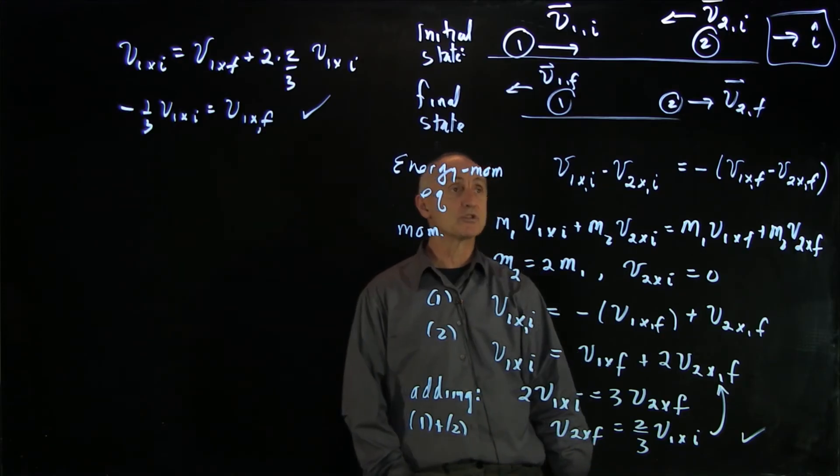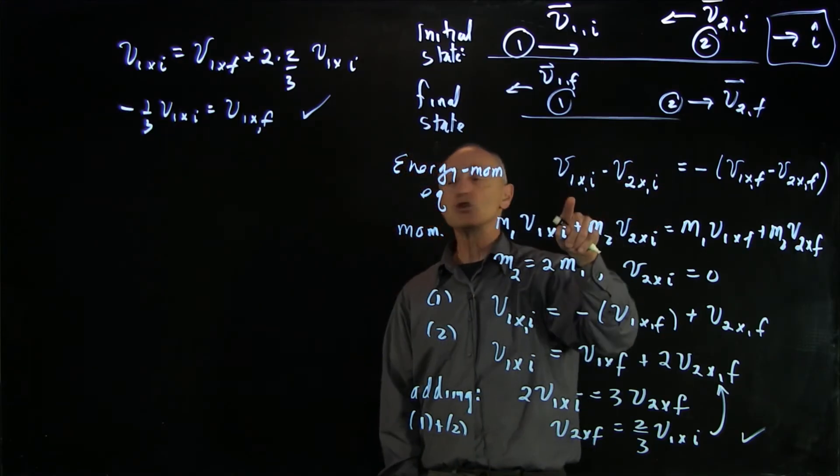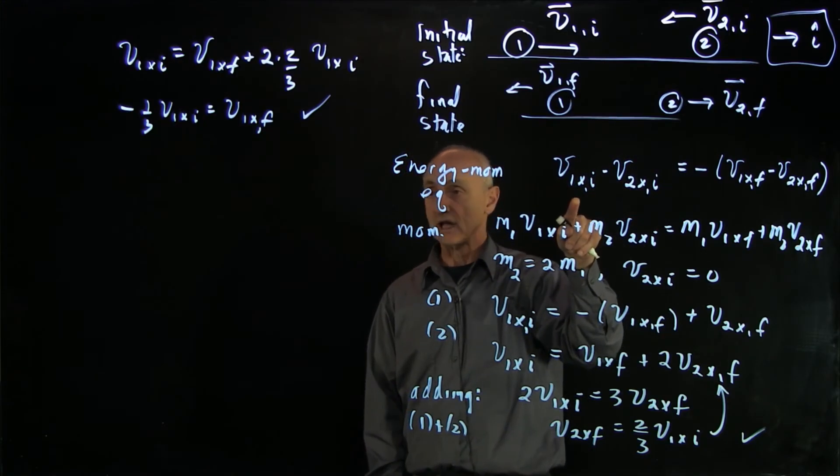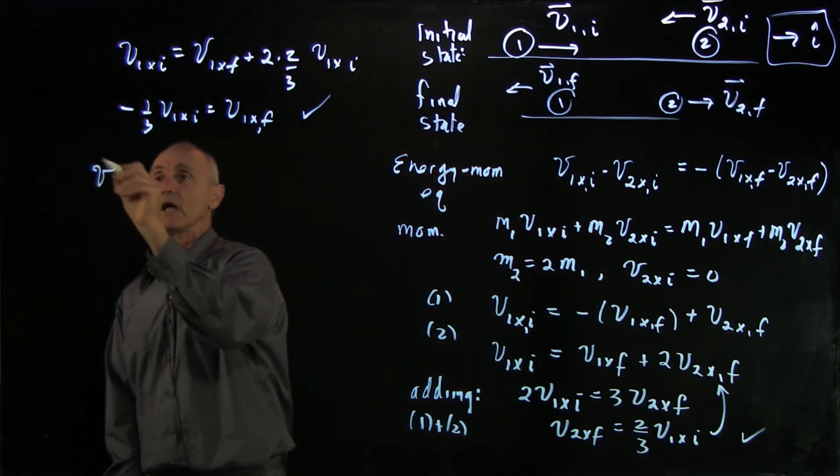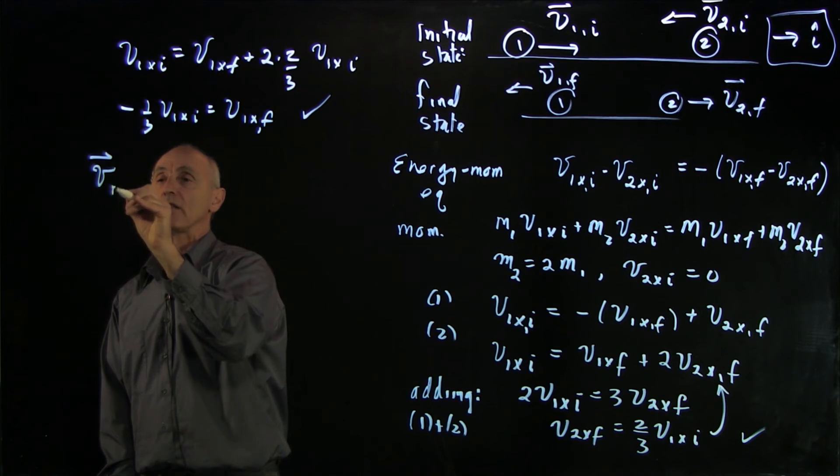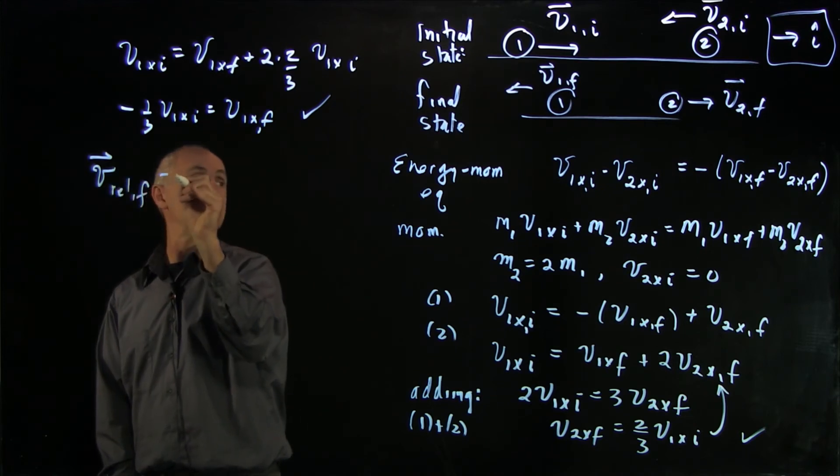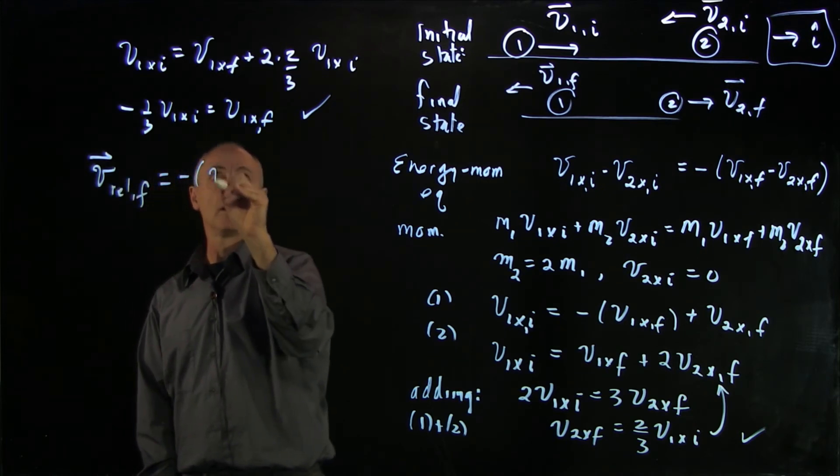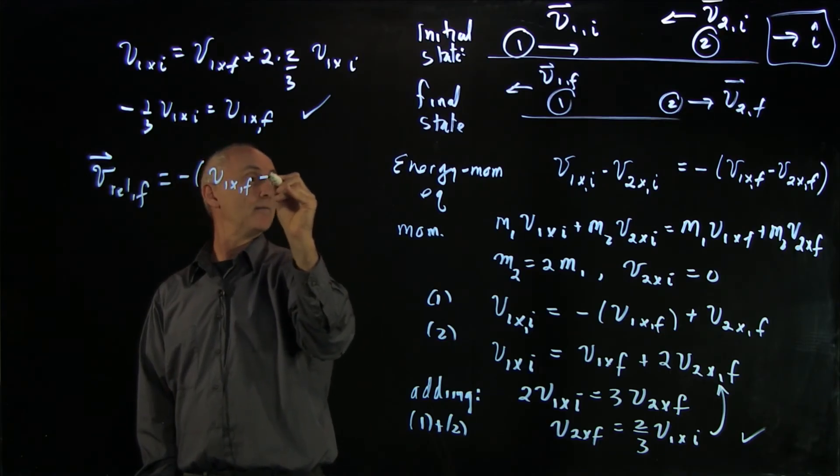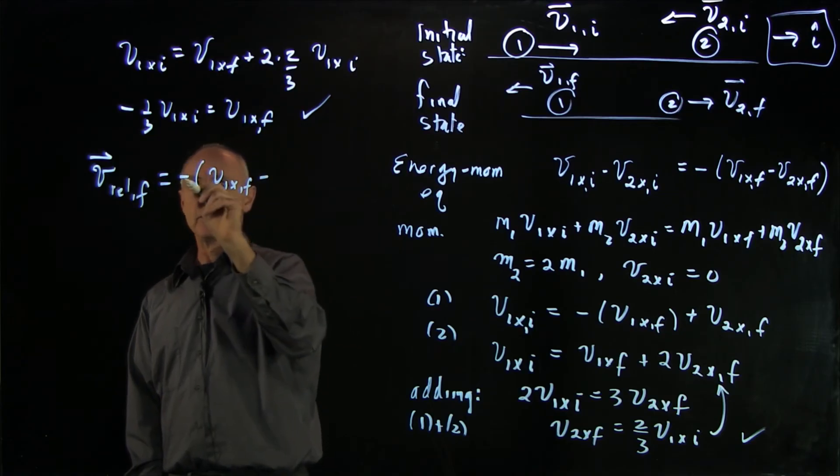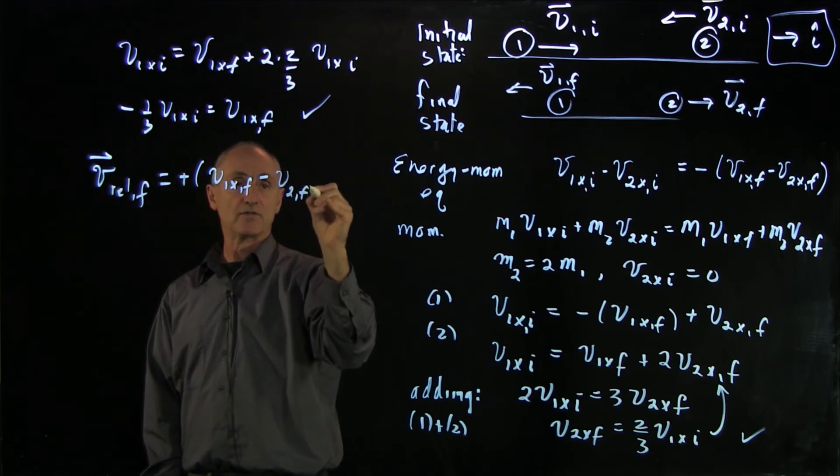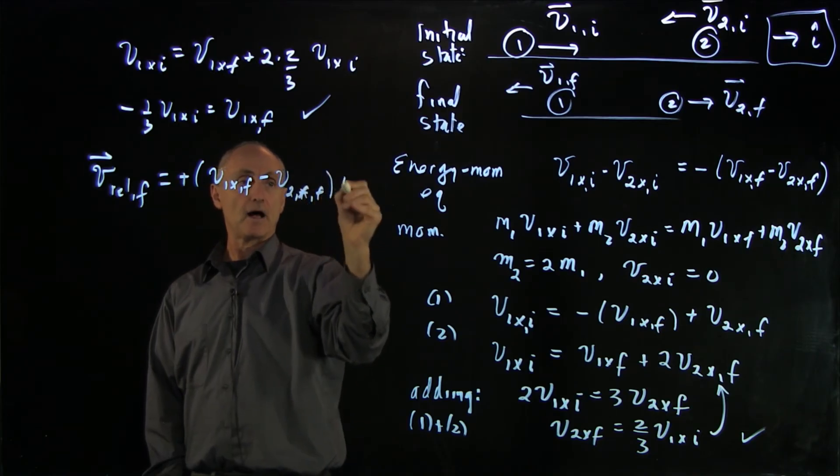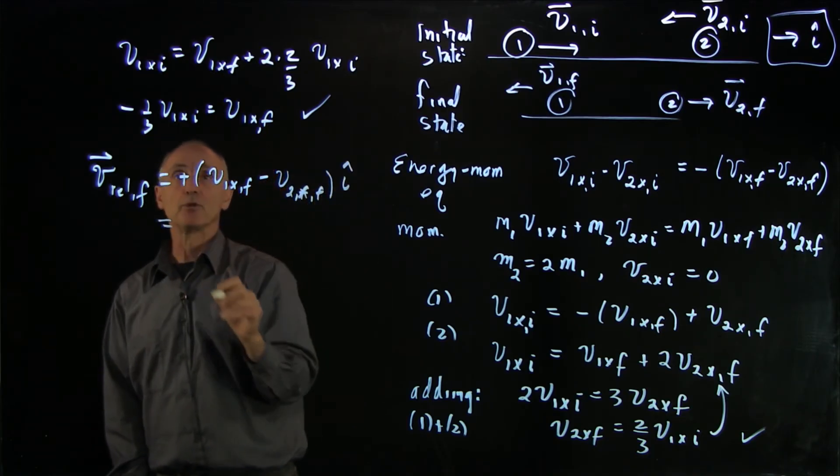And we can just double check our result that the initial relative velocity was simply v1 x. And the final relative velocity is minus v1 x final minus, let's see, the final relative velocity is v1 x final minus v2 x final i hat.